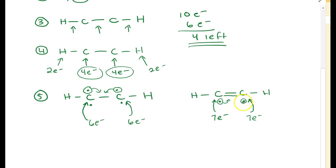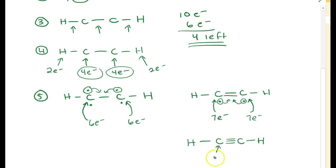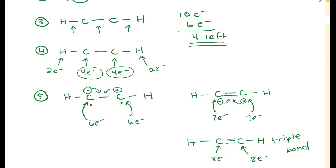We want to take the remaining lone electron from each carbon and share them to form yet another bond — creating a triple bond between the two carbons. Now let's check: each carbon has four bonds total — the triple bond counts as three, plus the bond to hydrogen makes four. Each bond counts as two electrons, giving eight electrons total on each carbon. Both carbons are now stable. This is called a triple bond, and the molecule is now stable.